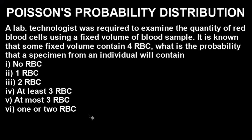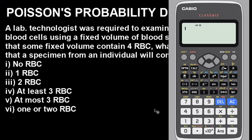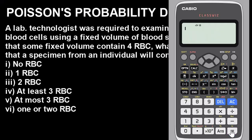Let's bring out the Casio fx-991ES calculator. The very first thing you have to do is clear the calculator — this is very important. It puts your calculator in default mode and removes whatever previous value or mode you might have placed it on. To do that, press the Shift button, then 9. When the instruction says 'initialize,' press 3, then press OK and press OK again.